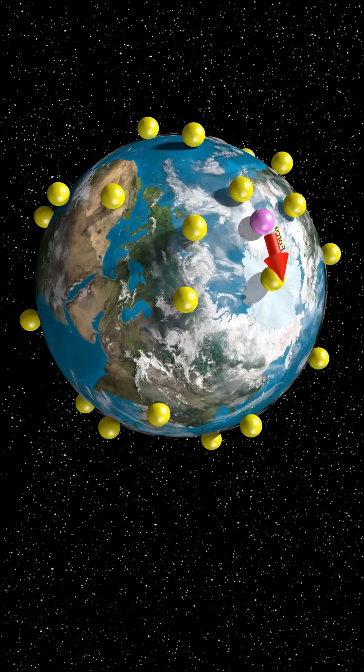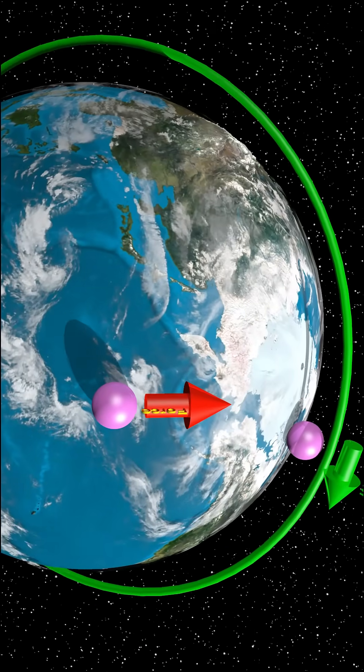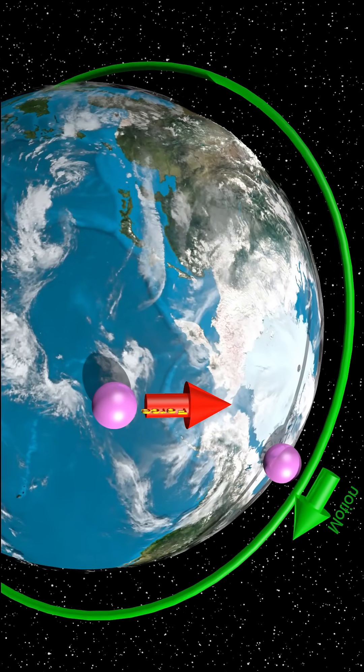Therefore, objects moving from the equator to the North Pole will veer in the opposite direction as objects moving from the North Pole to the equator.